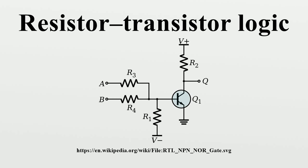Its resistance is settled by a compromise: it is chosen low enough to saturate the transistor and high enough to obtain high input resistance. The role of the collector resistor is to convert the collector current into voltage. Its resistance is chosen high enough to saturate the transistor and low enough to obtain low output resistance.